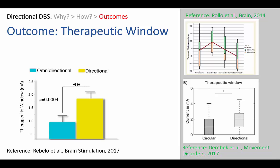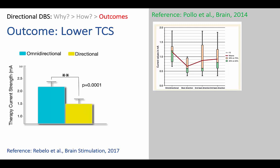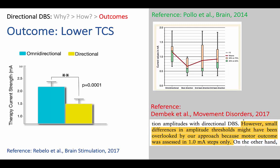Polo and others reported as early as 2001 in an intraoperative safety study that in the best direction, there was a significant improvement in therapeutic window. Dembeck et al. more recently have reported a similar finding in a post-operative study. The second key outcome in our study is lower therapy current strength — directional stimulation requires less power to produce the same level of benefit as omnidirectional stimulation. This has previously been reported by Polo and others. We now know why: it's partly a mixture of spending the energy in the right place, but also it can be more efficient at producing the same size of VTA. However, Dembeck and others did not reproduce this particular finding.